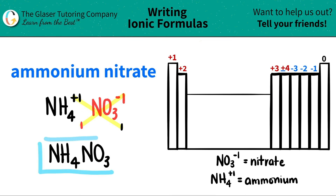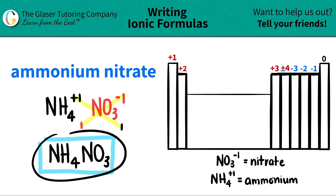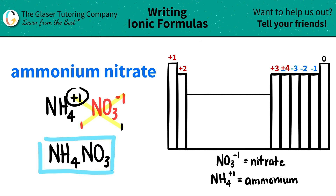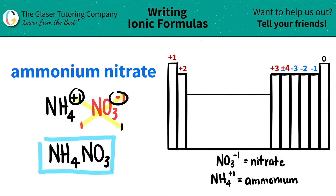Ammonium nitrate is NH4NO3. For anyone asking how this is ionic when there's no metal: ionic compounds simply mean there is a transfer of electrons — you have to have charges. Anytime you have a polyatomic ion it's going to be an ionic compound, because polyatomic ions have charges, and that's what constitutes an ionic compound.